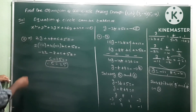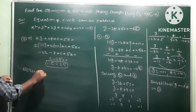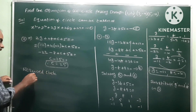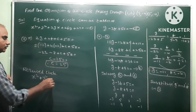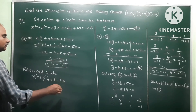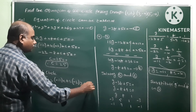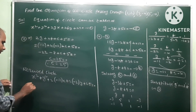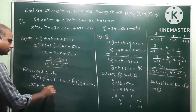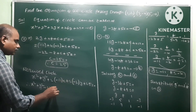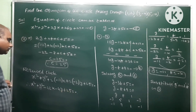Now write the required circle using general form with g = -11, f = -2, c = 25. The equation is x² + y² + 2(-11)x + 2(-2)y + 25 = 0, which simplifies to x² + y² - 22x - 4y + 25 = 0. This is the required circle equation.